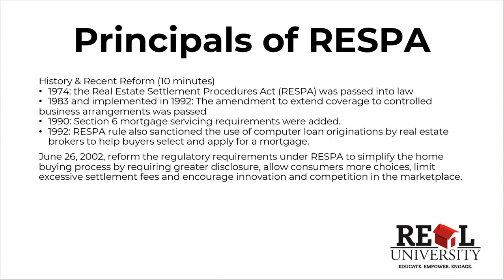Then they renamed that to affiliated business arrangements. In 1990, they added Section 6, which was the mortgage servicing requirement — that was the one section mentioned earlier.